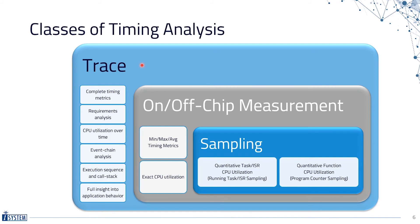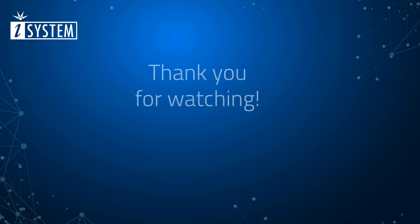From sampling, you can only get statistical results, meaning distributions and utilizations. The results are basically only approximations of reality, because with sampling there is no guarantee that all relevant events have actually been captured — the more data is sampled, the more accurate the result can be. The classes trace and sampling are drawn in blue, as these are the concepts which can be experienced with the iSystem profiler.